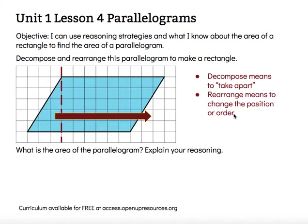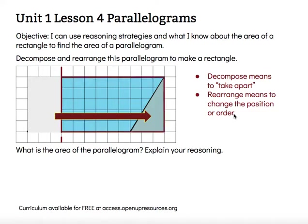So to summarize: decompose it by cutting off that triangle, then rearrange it to create that rectangle. Then I can see that I have a rectangle that's five units high and nine units wide, so there are 45 squares inside that rectangle, meaning I would have an area of 45 square units.